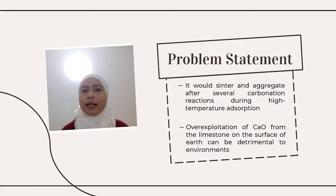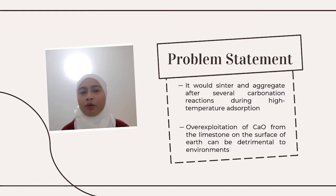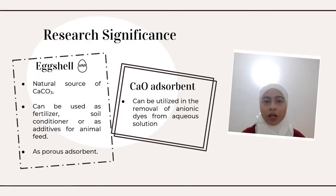The second problem is associated with the source of calcium oxide. At present, the primary source of calcium oxide is limestone on the earth's surface. However, this limestone has been extensively used in road and building construction, and this over-exploitation of limestone can be detrimental to the environment.